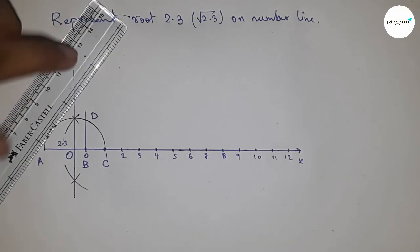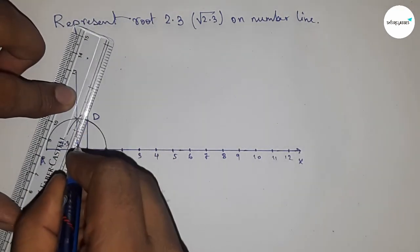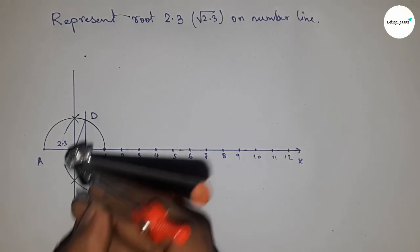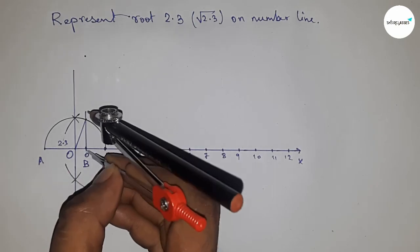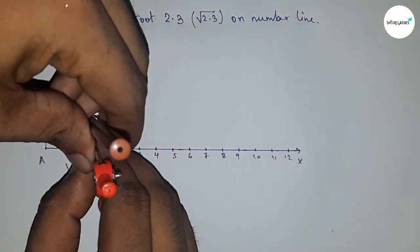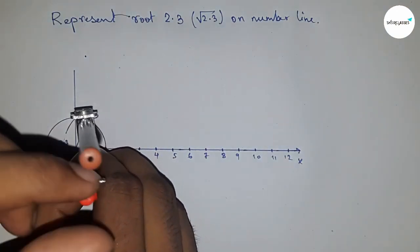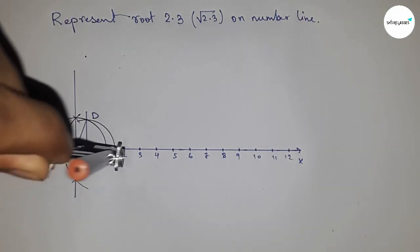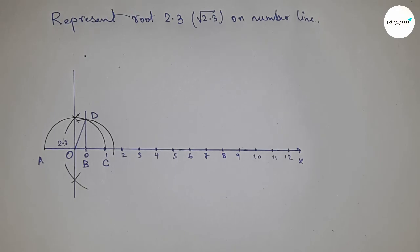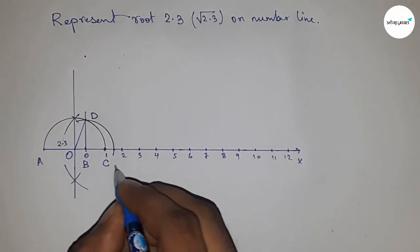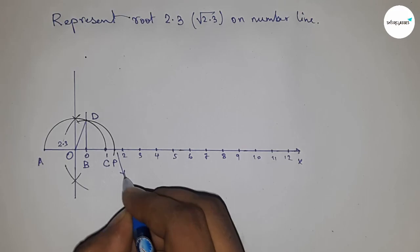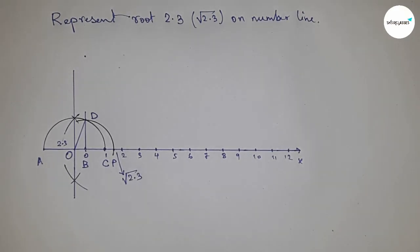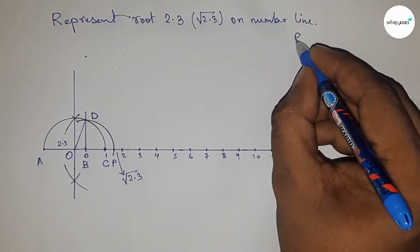Join O and D—this is the radius of the semicircle. Take the distance BD, which equals root 2.3. I will prove this in this video. Draw an arc with radius BD which meets the line at point P. This is the representation of root 2.3 on the number line.